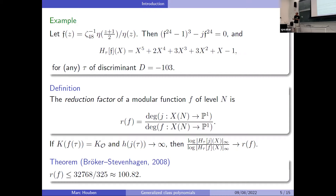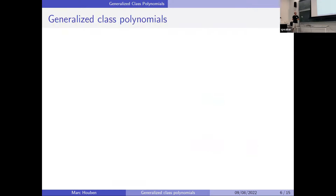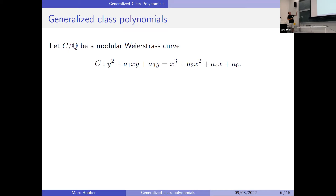What we did is generalize these class polynomials further to become multivariate. Instead of univariate functions that vanish at the Galois orbit of the CM points, we get multivariate functions that vanish at the Galois orbit of the CM points on a modular curve. Consider a Weierstrass curve that happens to be a modular curve: you can view the coordinate functions x and y as modular functions satisfying the equation of the curve.